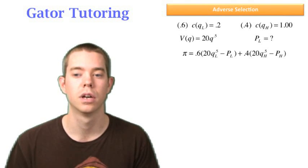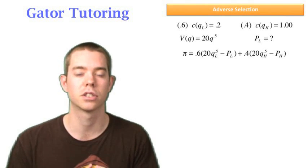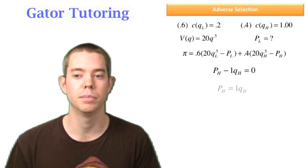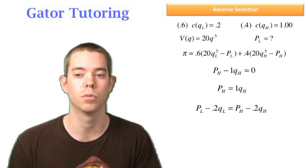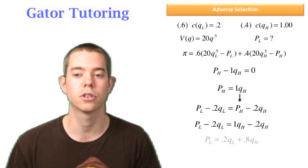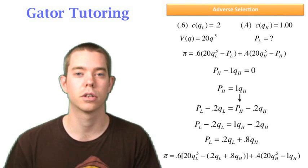So from here, we're going to use both constraints and we're going to look at profit and we're going to substitute in for PL and PH into our profit function. Well, PH is easy because we can solve for it. We know that PH is equal to 1QH. So substituting in for PH in our profit function is pretty easy. PL is not as straightforward again, but we know that we can substitute what we know for PH, which is 1QH straight into the PL or the selection constraint. Now we need to solve for PL. So we substitute that in, we combine like terms and rearrange this thing and we get PL is equal to 0.2QL plus 0.8QH.